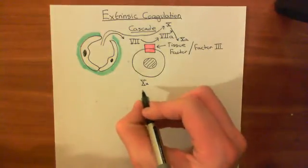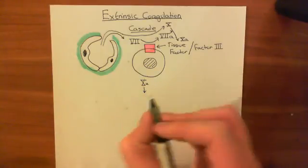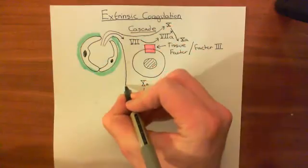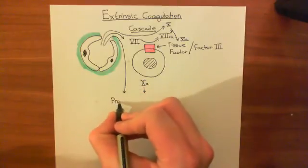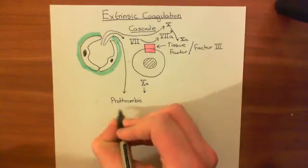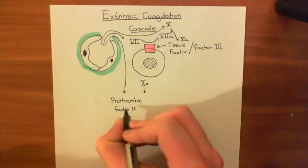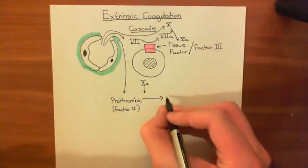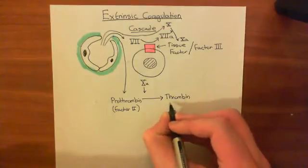What factor 10a does is it activates thrombin. Also coming out of the blood through the hole in the capillary wall is prothrombin, also called inactive factor 2. Prothrombin, or factor 2, is converted by factor 10a to thrombin, or factor 2a.